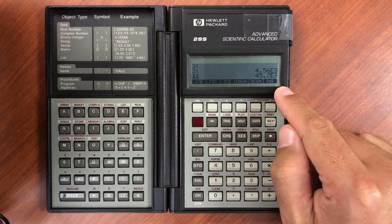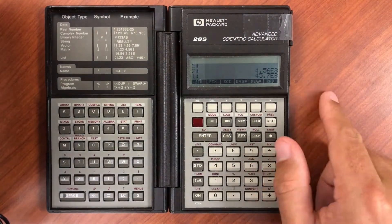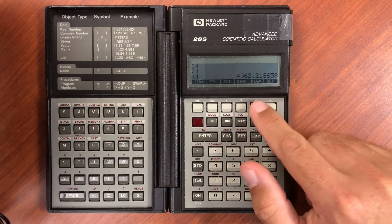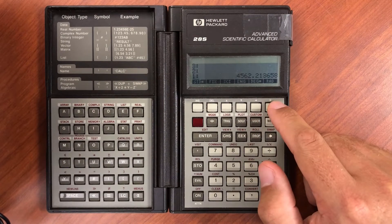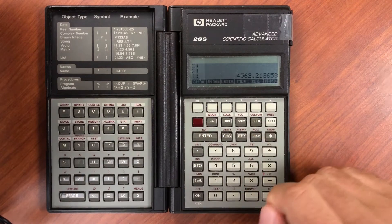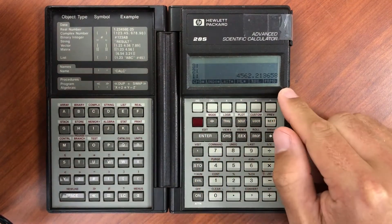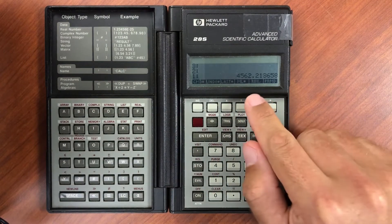And again, multiples of three. Of course you can change from degrees to radians. And then if we go to next, you can see the second line of the menu and you can change your radix here.